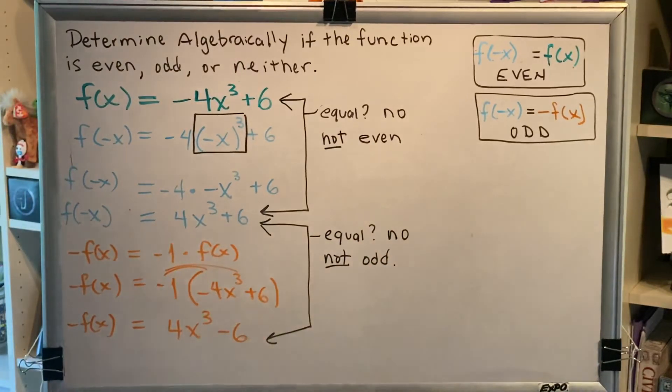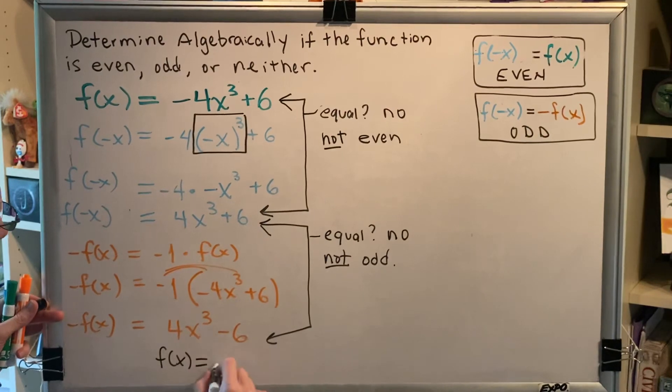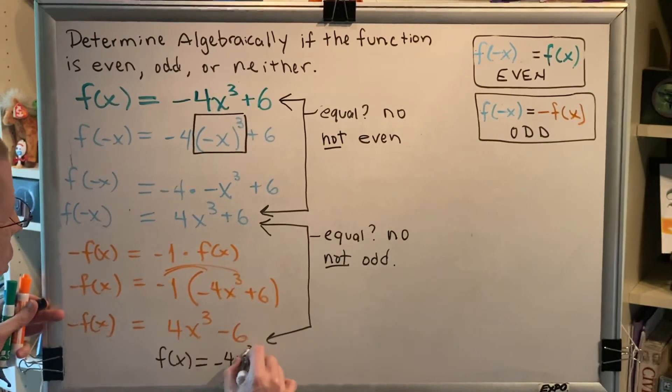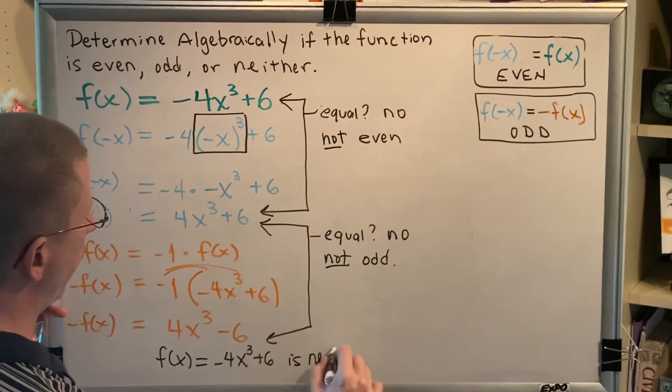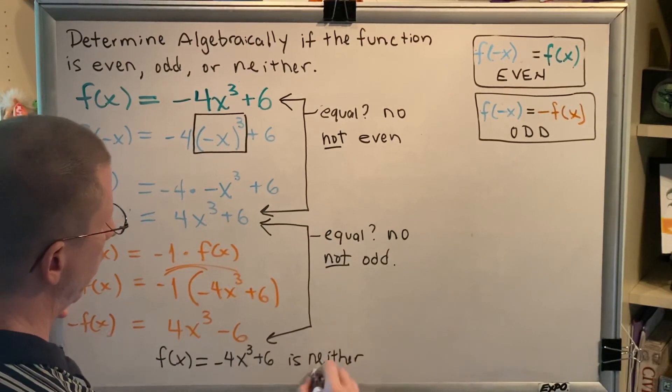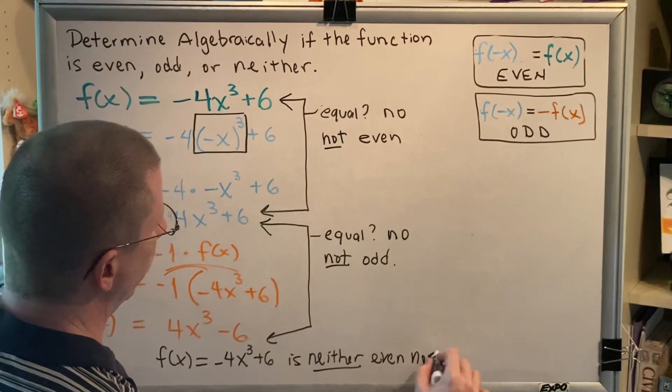So, if something is not odd and it's also not even, then that makes it neither. So, we can write our conclusion: f of x equals negative 4x cubed plus 6 is neither even nor odd.